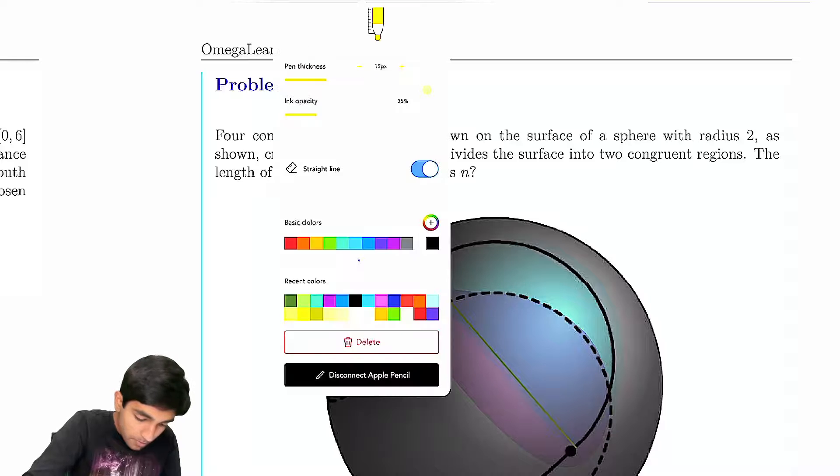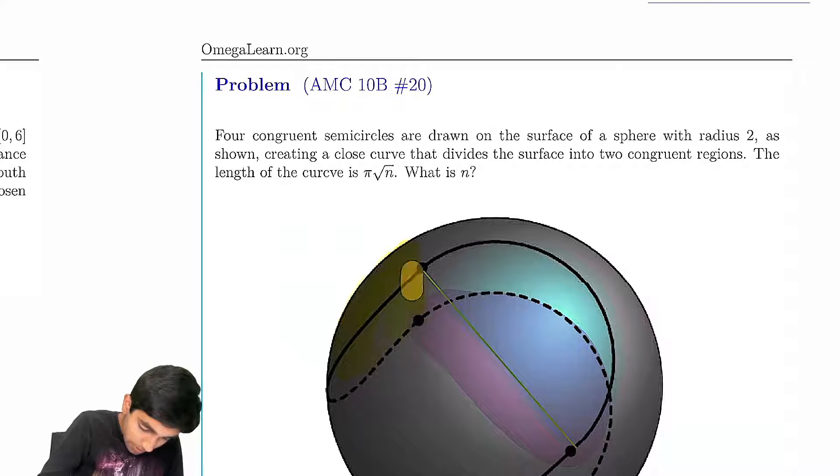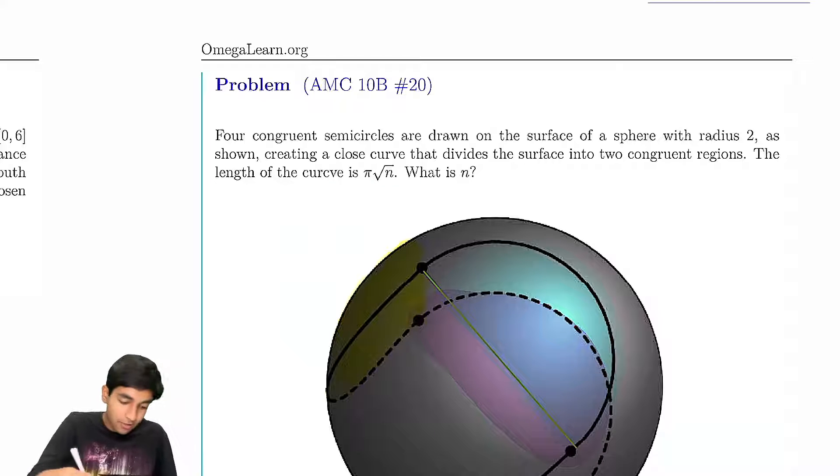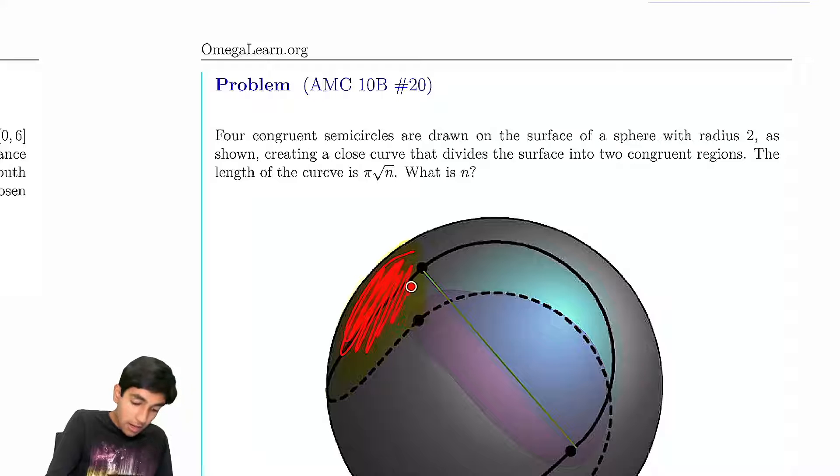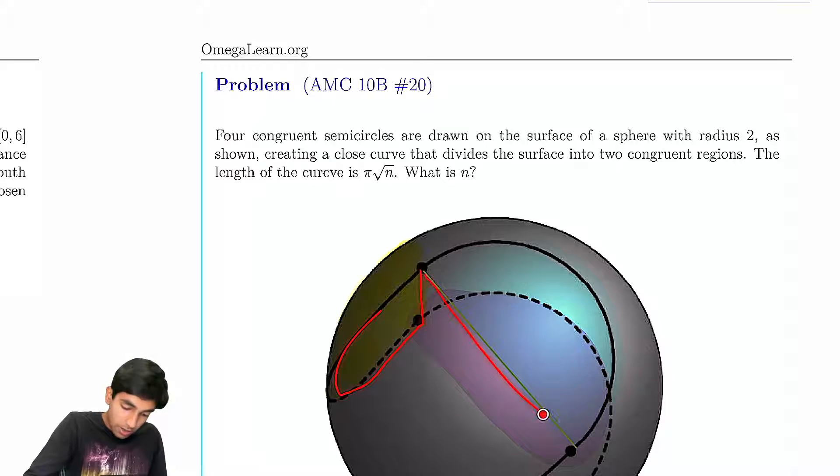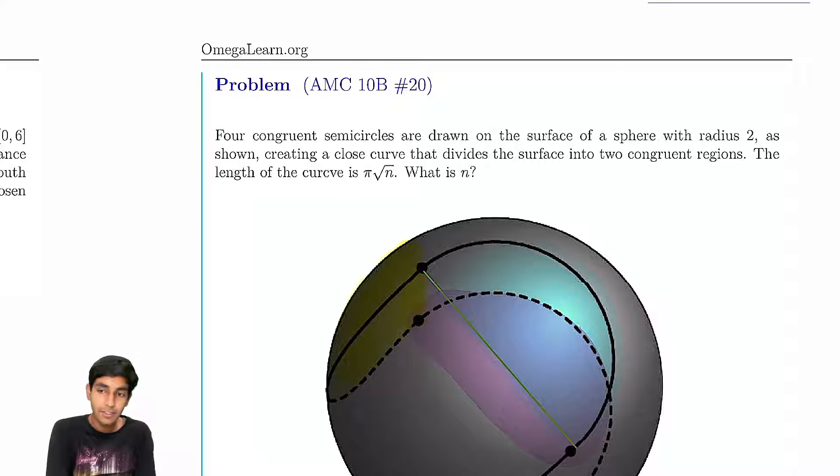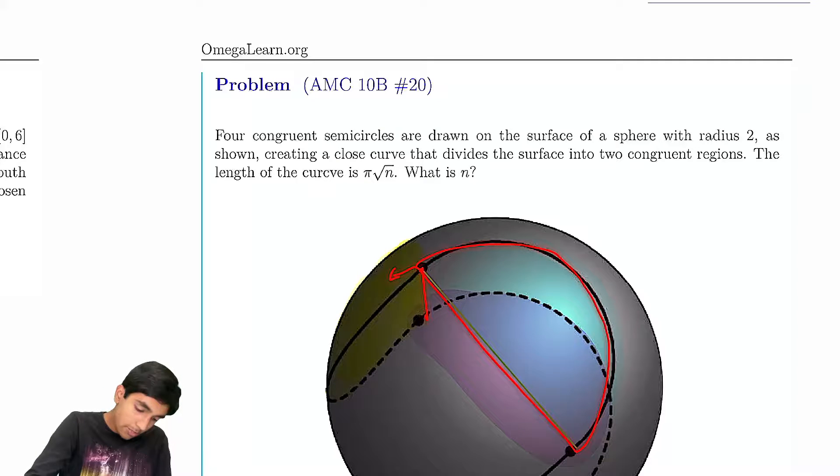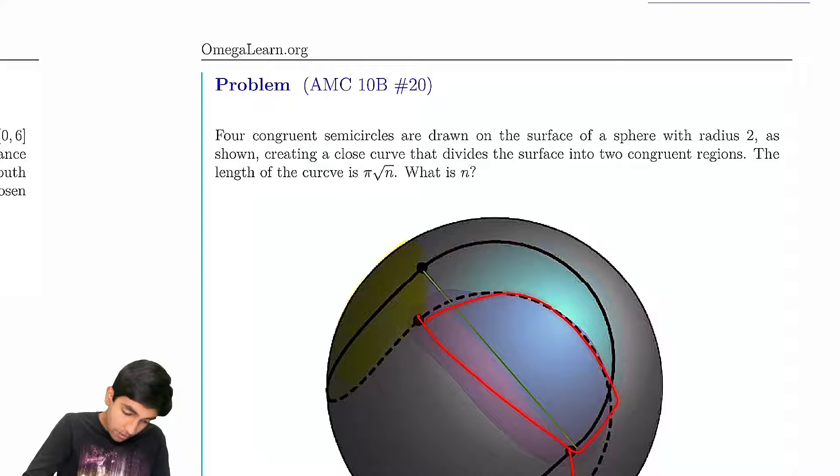We can see something very similar about this region over here. If you imagine this spherical region over here, like we have a semicircle that bulges out, the surface area of that spherical region is going to be exactly the same as the surface area of this spherical region. That's pretty cool. So imagine we just take this blue region and move it here. We move it to this part over here. Similarly, we take this purple region and we move it.